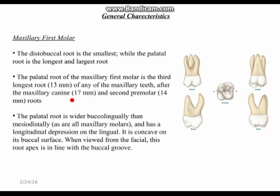The palatal root is wider buccolingually, similar to the mesiobuccal root. It has a longitudinal depression on the lingual surface and is concave on its buccal surface when viewed from the facial. The root apex is in line with the buccal cusp.